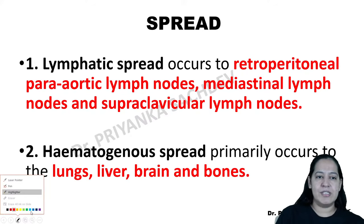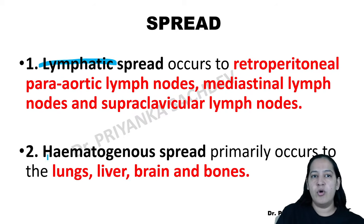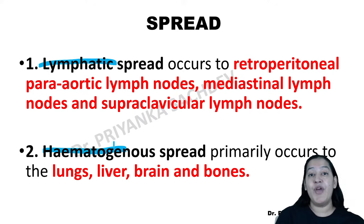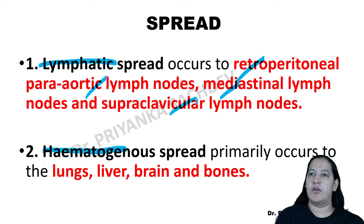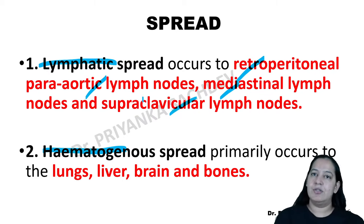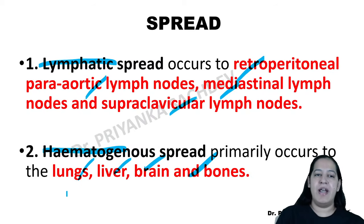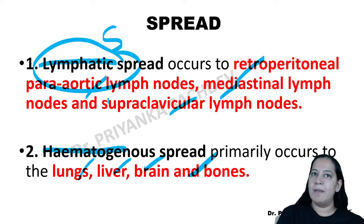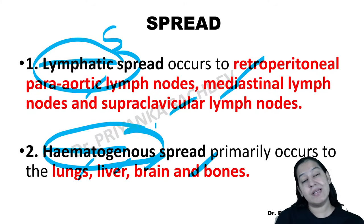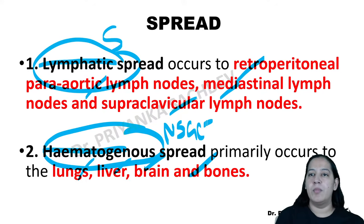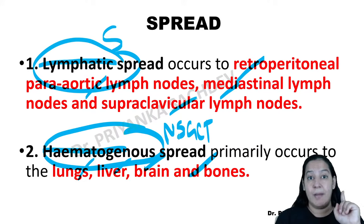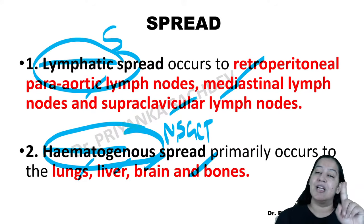Routes of spread of testicular tumor: two routes — lymphatic and hematogenous. Lymphatic spread goes to retroperitoneal lymph nodes, para-aortic lymph nodes, and sometimes mediastinal and supraclavicular nodes. Hematogenous spread goes to lungs, liver, brain, and bone. Importantly: seminoma spreads by lymphatics, while non-seminomatous germ cell tumors spread by hematogenous route.